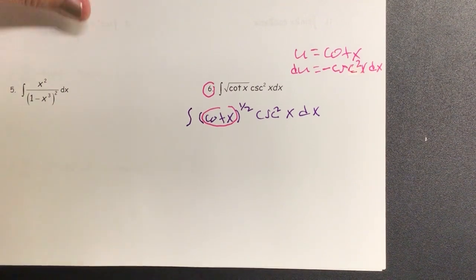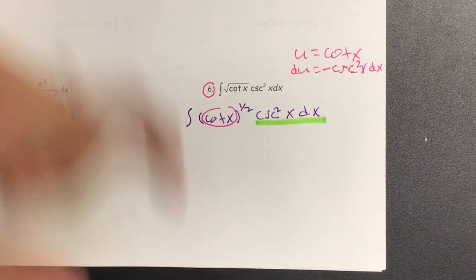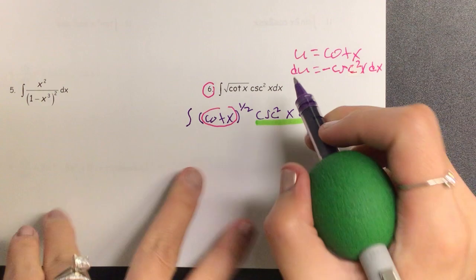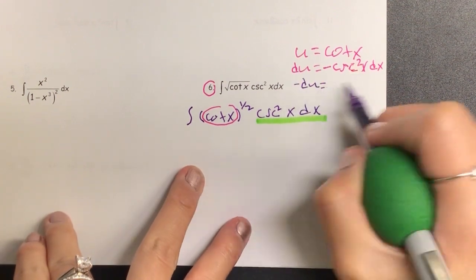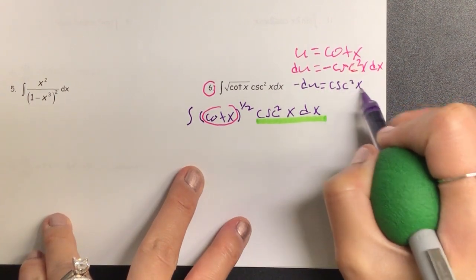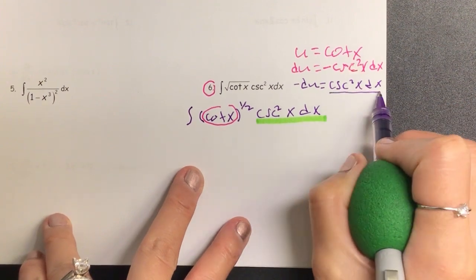And then we're pretty much almost there. We have cosecant squared, but they're positive, right? So I need to move it over to the other side. So negative du is equal to cosecant squared x dx, which I now have all of.